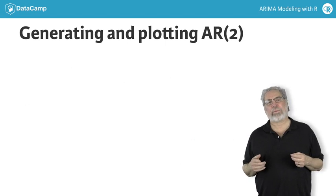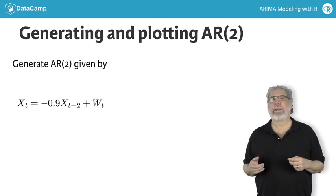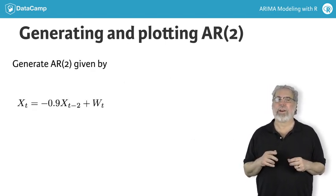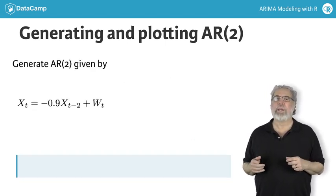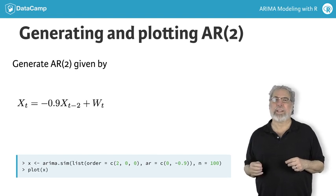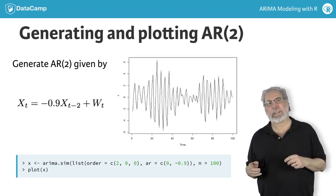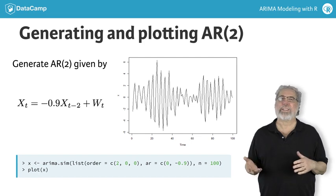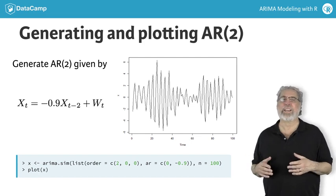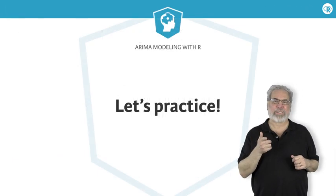In this example, we'll generate and plot 100 observations from an AR(2) with parameters 0 and minus 0.9. Notice that the data are somewhat cyclic, a lot like the Southern Oscillation Index. OK, your turn.